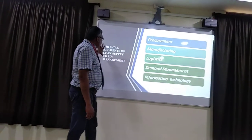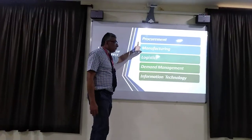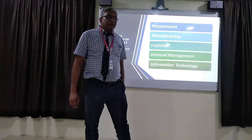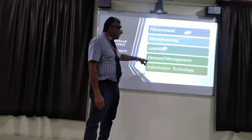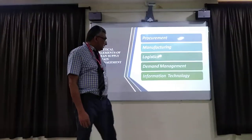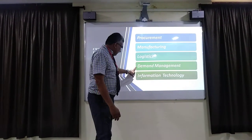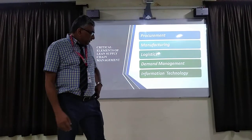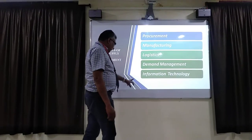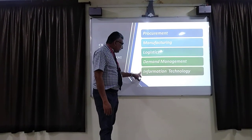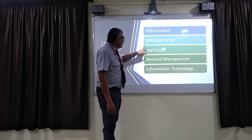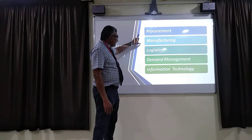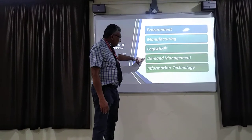The critical elements in supply chain management are: first, the procurement process — what is your procurement and how will material be delivered? Another is manufacturing — what is the capacity of your plant? Another is logistics — how are deliveries made through various agencies? Then demand management, where we fulfill demand from the customer, and information technology, which deals with the integration of information with computers, analytics, IoT, and internet or intranet. These are all critical elements for a successful supply chain.